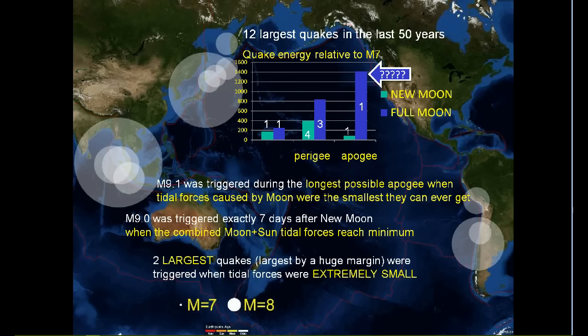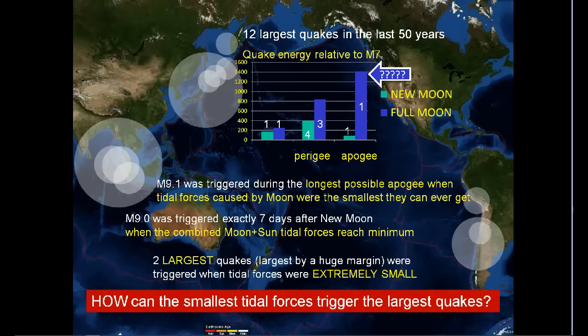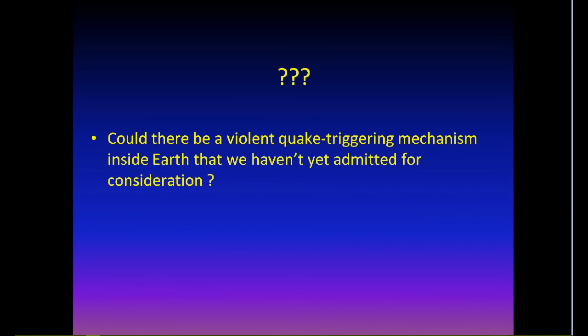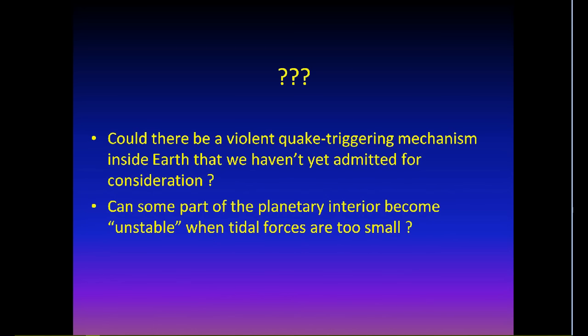So, the two largest earthquakes in the last 50 years, an order of magnitude larger than other prominent earthquakes, were triggered when tidal forces were extremely small. How can the smallest tidal forces trigger the largest earthquake? Could there be a violent quake-triggering mechanism inside Earth that we haven't yet admitted for consideration? Can some part of the planetary interior become unstable when tidal forces are too small? Does this instability depend on global warming?